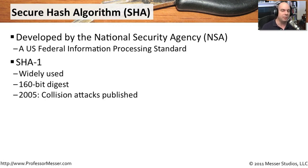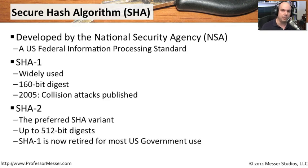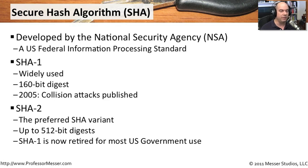Unfortunately, this is again a common problem with hashing algorithms. In 2005, there was a publication describing collision attacks that could occur with SHA-1. So the natural progression was to create something better. SHA-2 was created to replace SHA-1 and is now the preferred SHA hashing algorithm variant, with a larger 512-bit digest — the idea being that a longer bit length makes it more difficult to find collisions.